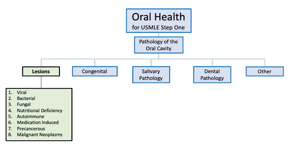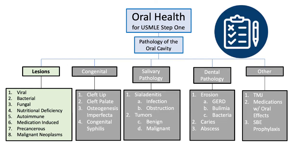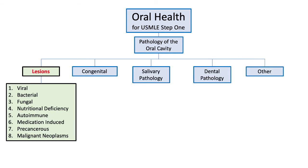Here are the lesions we'll be discussing in this section. The list is lengthy but with some prompting you will discover that the oral health topics for USMLE Step 1 are straightforward with recognizable features. At the conclusion of section 2 there will be a few questions to assess your basic understanding of these topics. Oral lesions can be broken into manageable categories based on the cause of the lesion. We'll launch into this discussion with a focus on viral lesions.